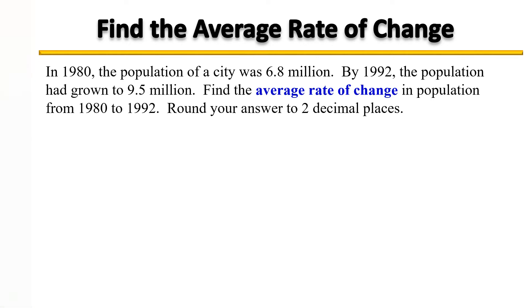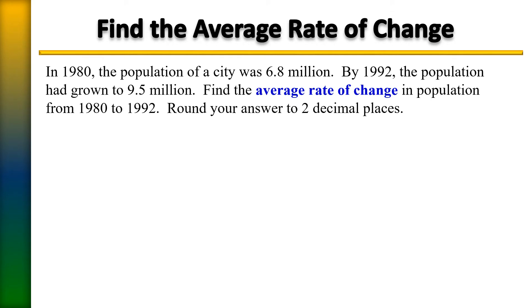In this example, we will be finding the average rate of change of given data. In 1980, the population of a city was 6.8 million. By 1992, the population had grown to 9.5 million. Find the average rate of change in population from 1980 to 1992 and round your answer to two decimal places.